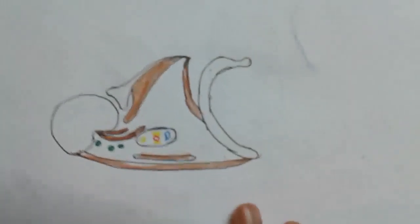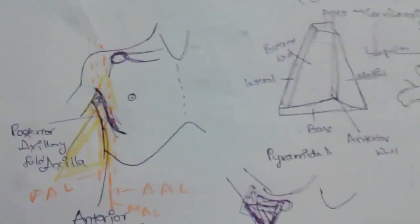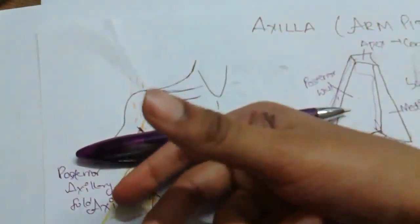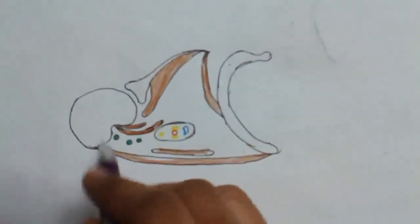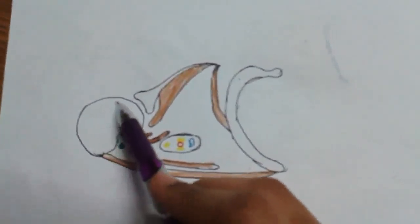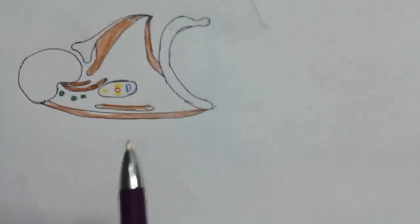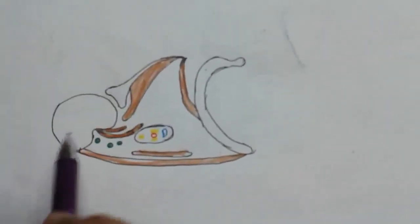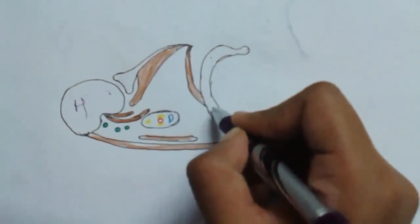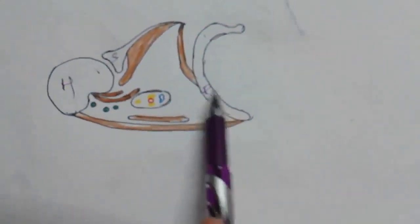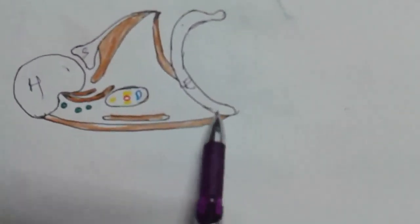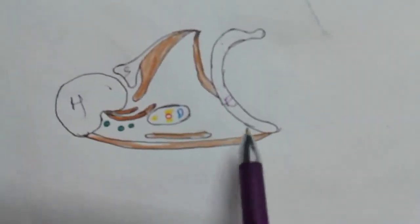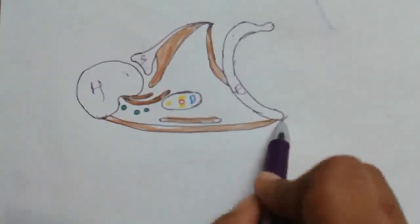Now let me show you the cross-section of the axilla. If you cut it and invert it, you get this cross-sectional view. The bones visible are: the first rib, the humerus, and the scapula. If you cut at the first rib level you see the apex; cutting at the second to fourth rib level shows the general cross-section.